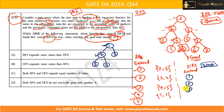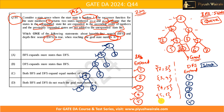Continuing DFS: I expand node 3 next, getting 4 and 5. I go to node 4 first. Expanding node 4 gives me 5 and 6. I then expand node 5, getting 6 as a successor, which is the goal state. So DFS also expanded 5 nodes — 1, 2, 3, 4, 5 — to reach goal state number 6.